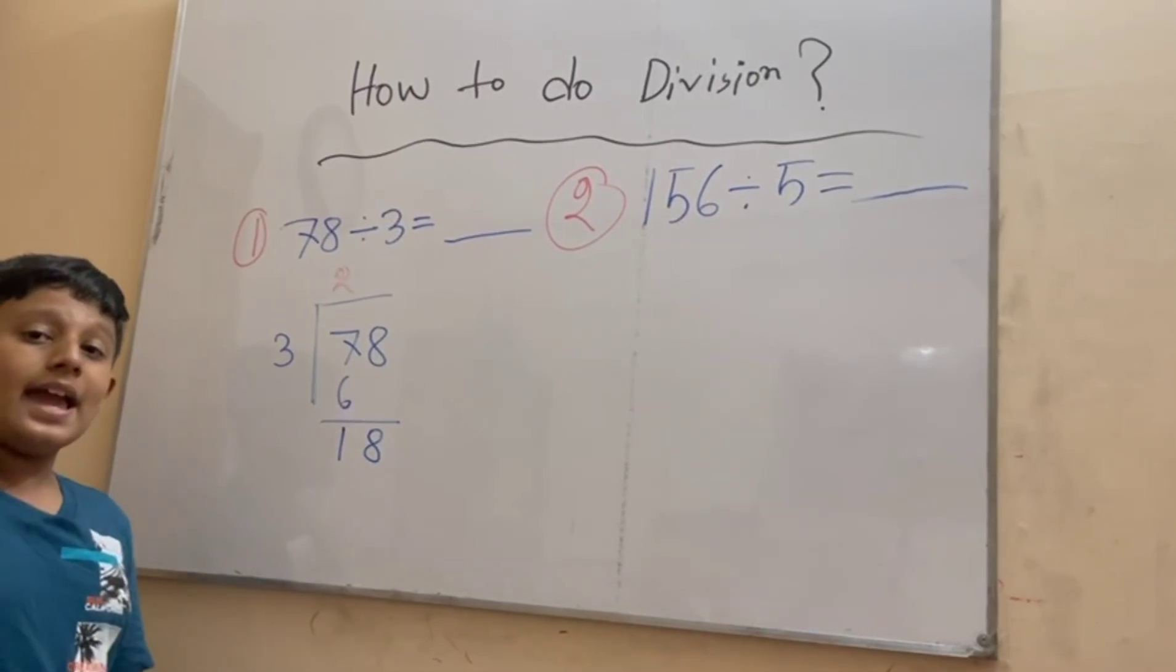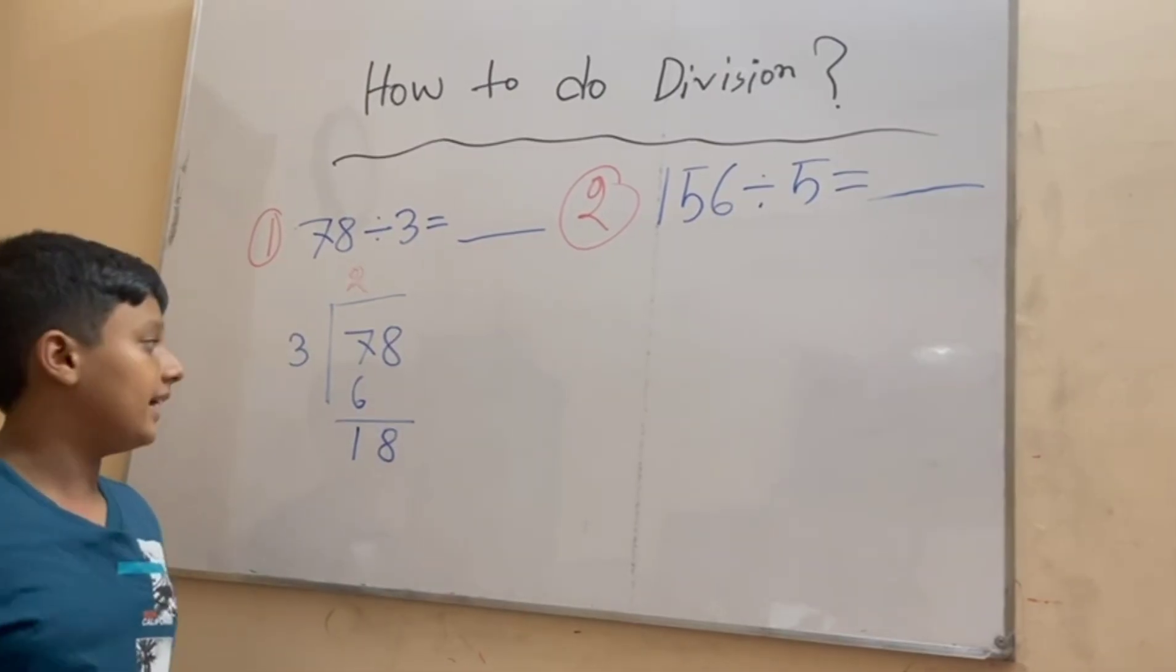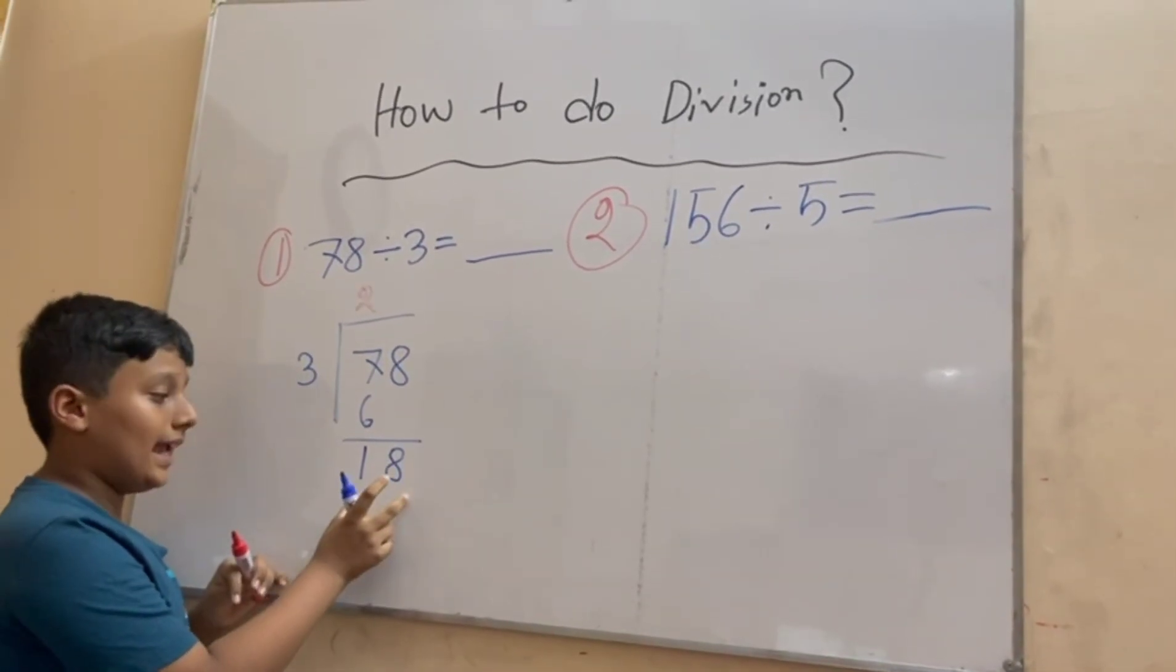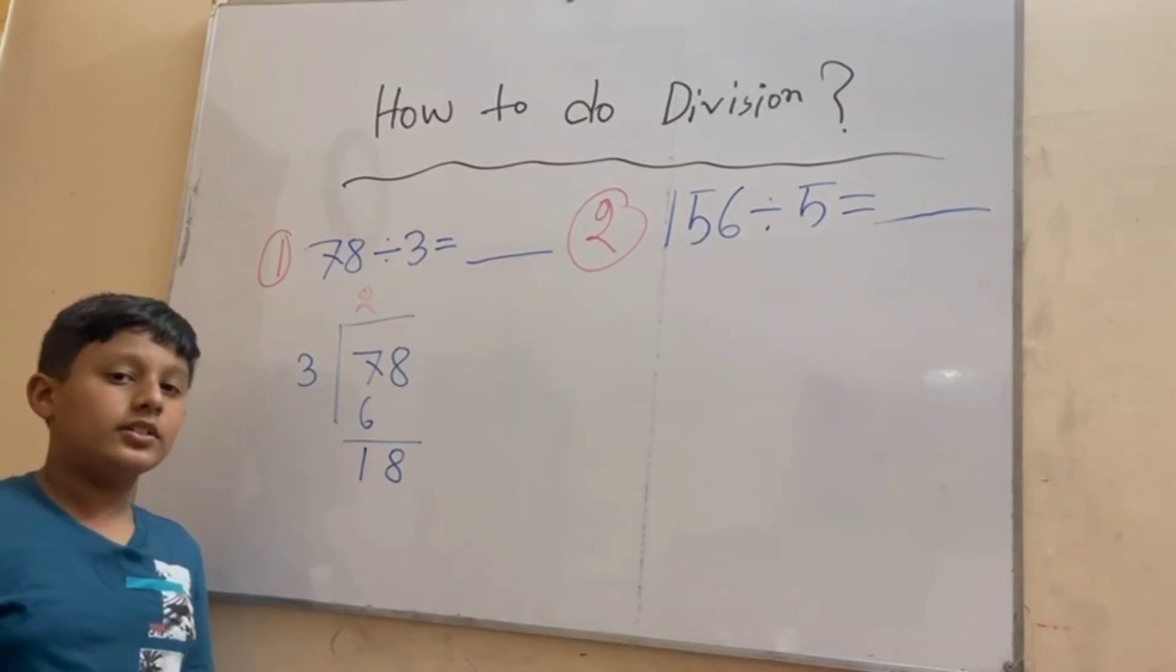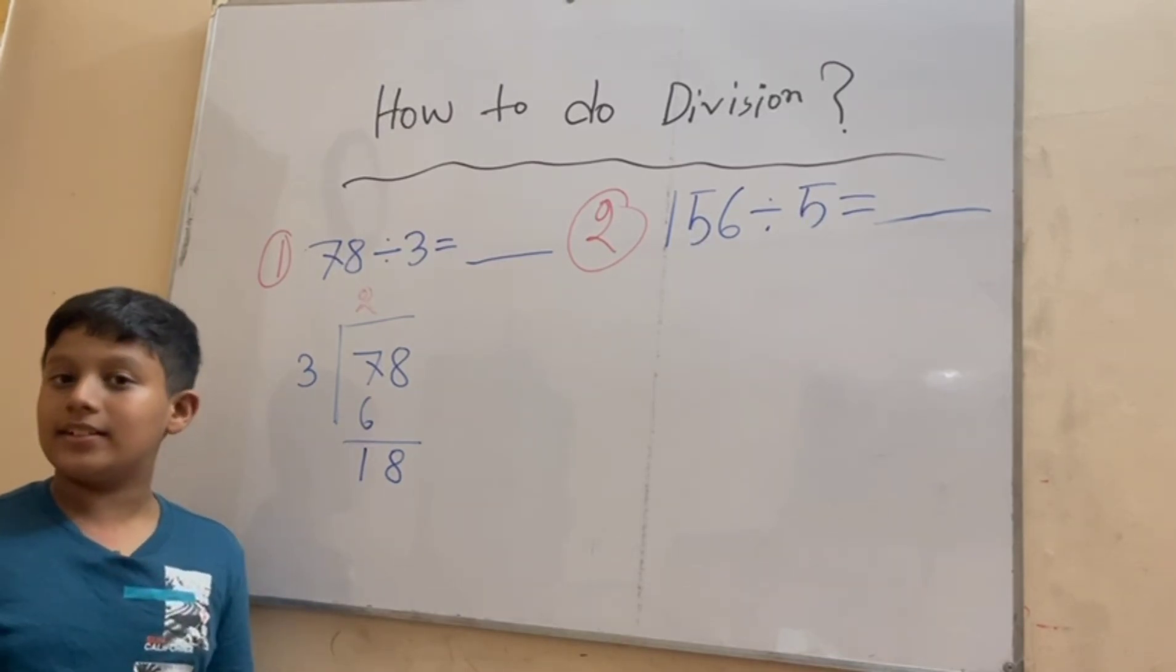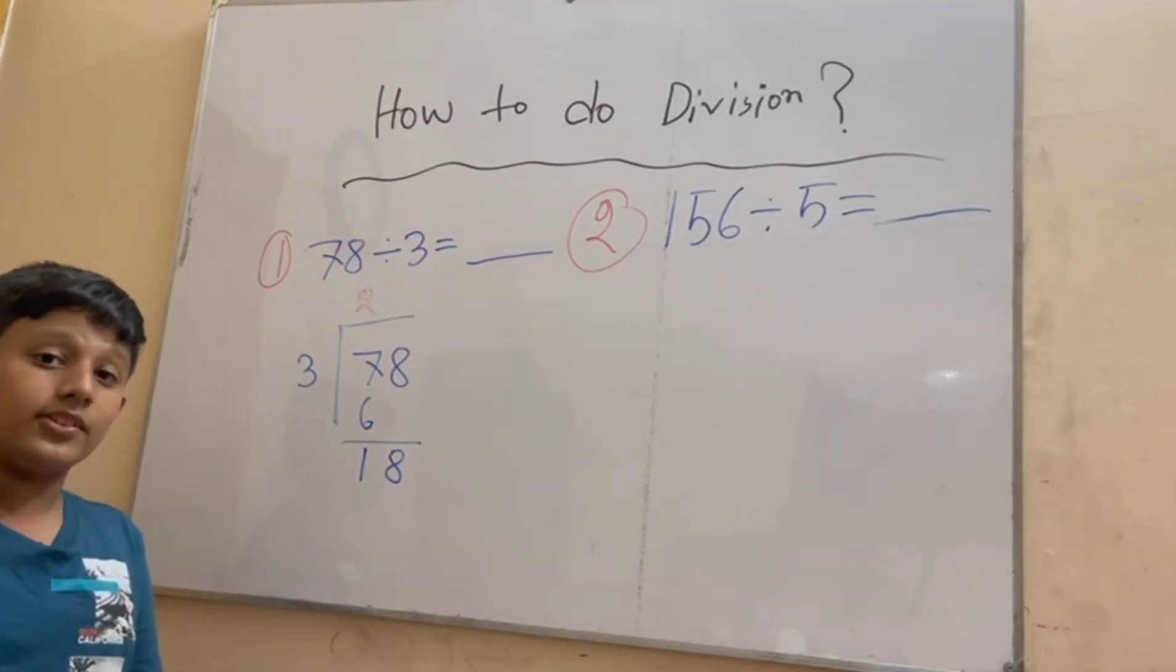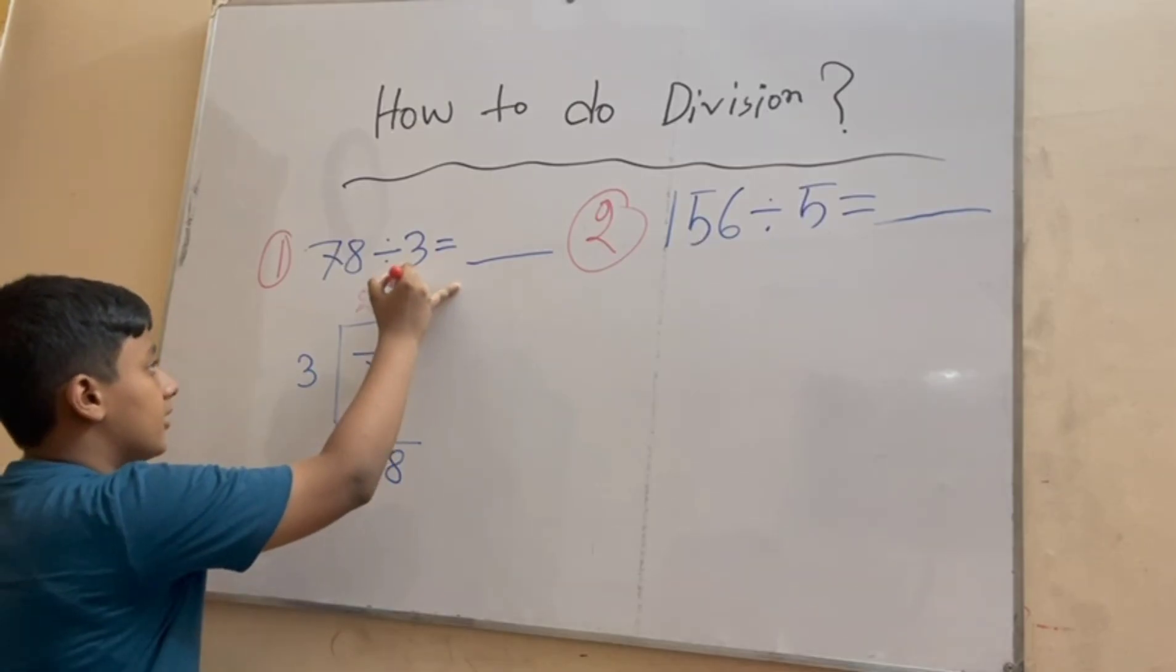Three ones are three, three twos are six, three threes are nine, three fours are twelve, three fives are fifteen, three sixes are eighteen. So we have got our answer. It is already eighteen. When we do three times six is equal to eighteen.